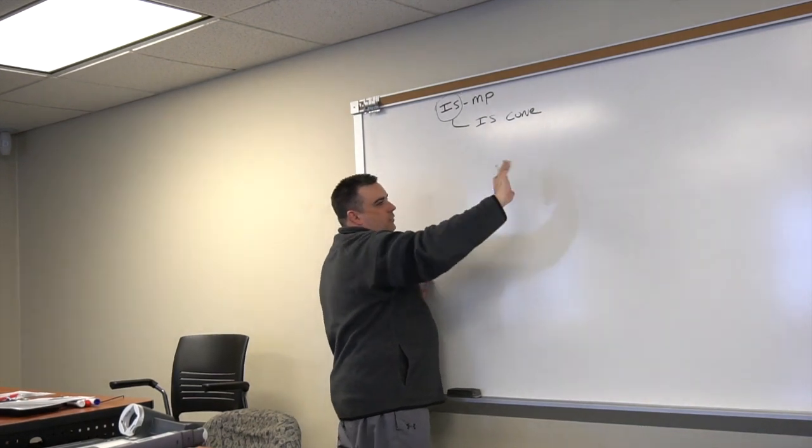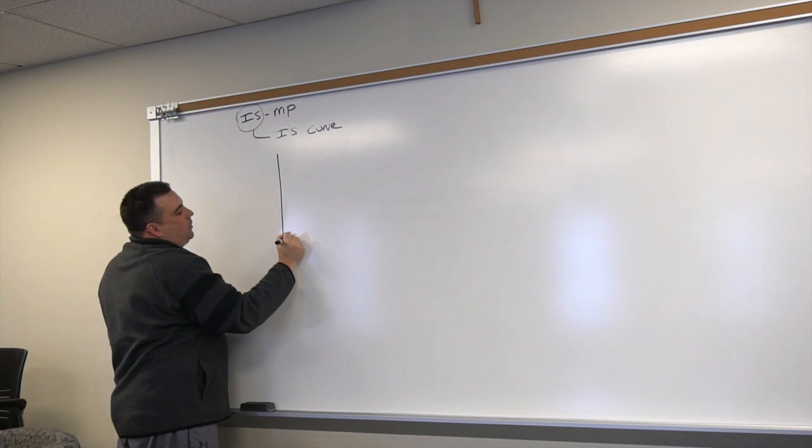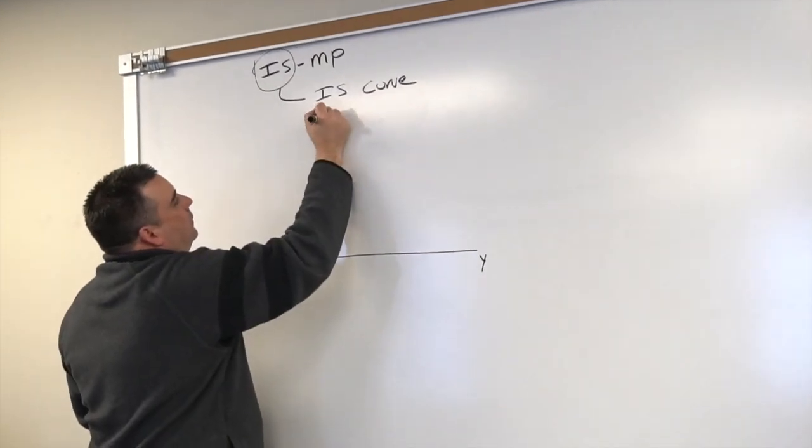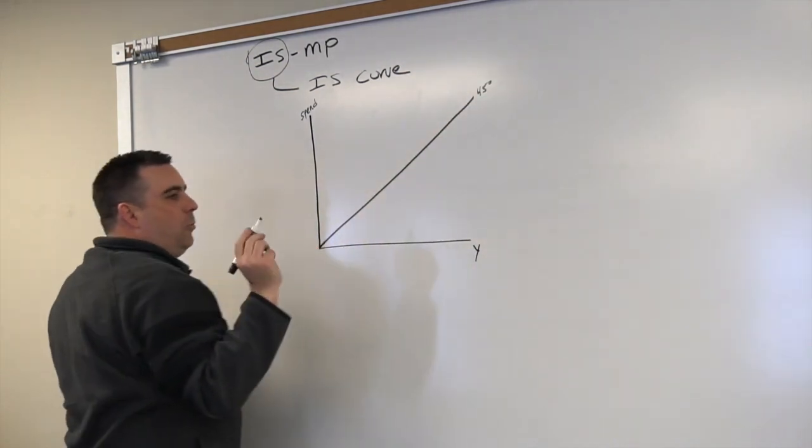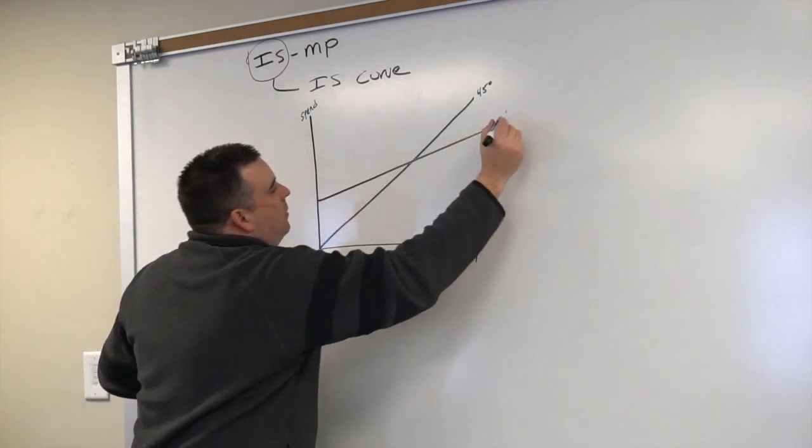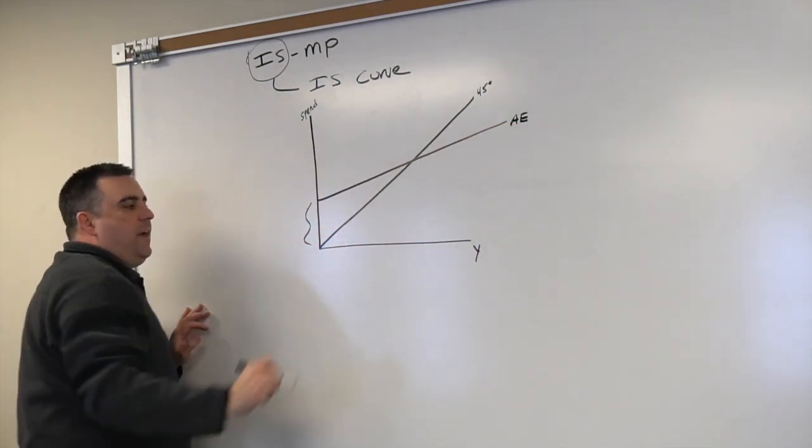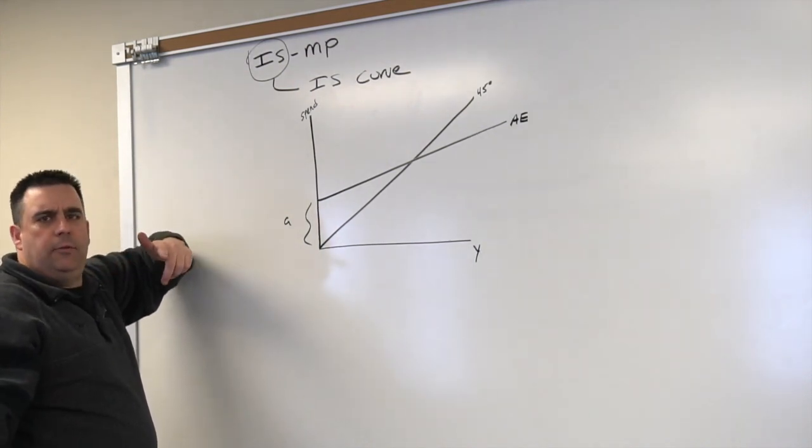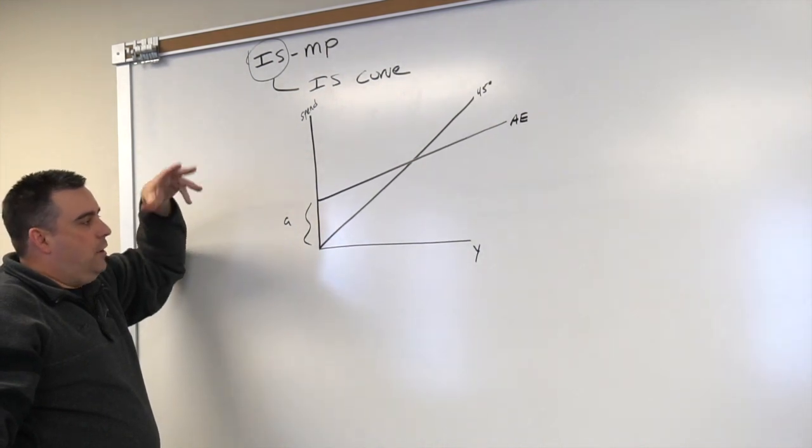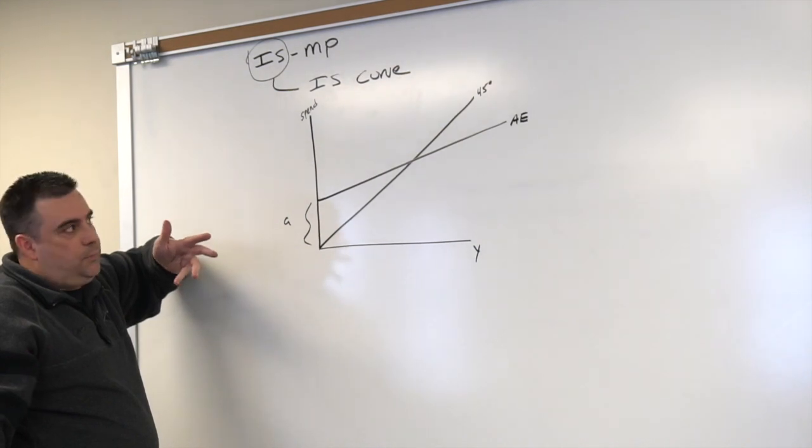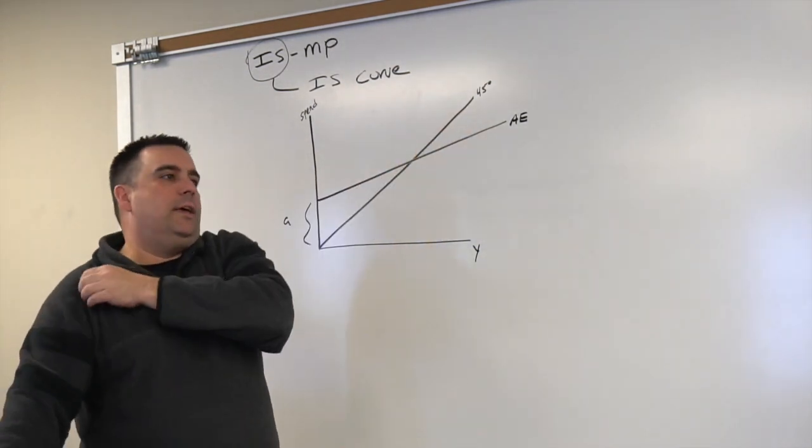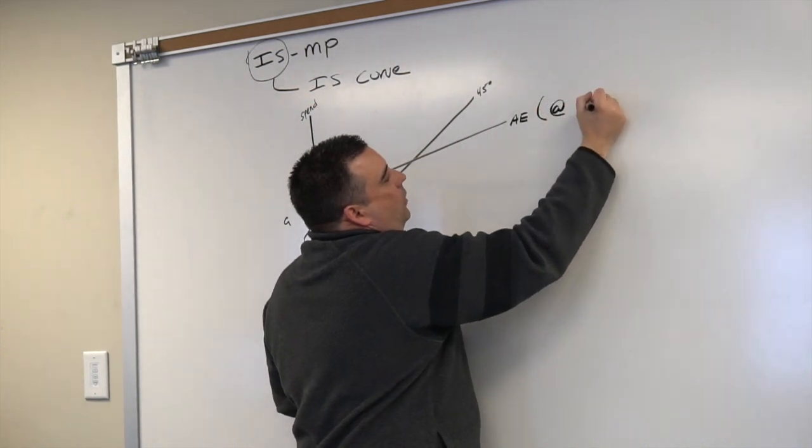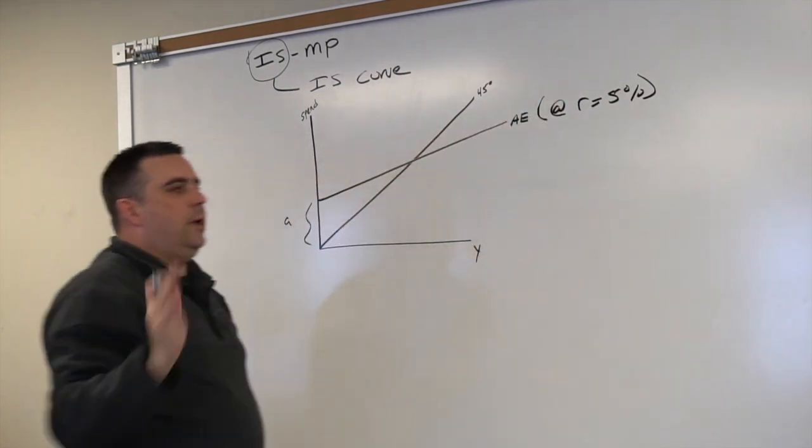If we think back to when we did our aggregate expenditure model, we have Y, we have spending, we had this 45-degree production function, and then we had our aggregate expenditure function. Part of this aggregate expenditure function was based on some autonomous value, this A, and we said things like wealth are going in there, things like future expectations, and then one of the things I wrote on the board was the interest rate - that the interest rate fluctuation may change our desire to spend regardless of what our income is, which means that this aggregate expenditure function is occurring at some interest rate value, right? So this is at R equals 5%, arbitrary, made up, there's no math or anything that I did to get that.